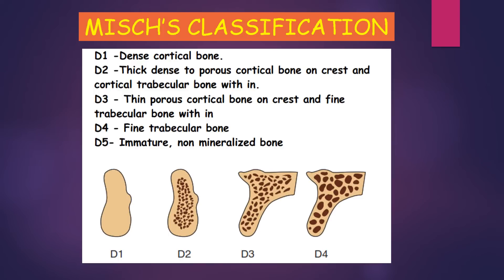According to Mish, he described four bone densities found in the anterior and posterior regions of the maxilla and mandible. D1 bone is primarily dense cortical bone. D2 bone has thick, dense, porous cortical bone on the crest and coarse trabecular bone within. D3 is thick, porous cortical bone on the crest and fine trabecular bone within. D4 is fine trabecular bone. And D5 is an additional density — immature, non-mineralized bone.